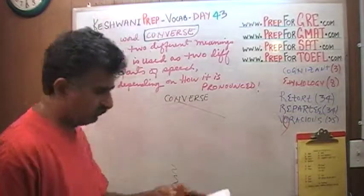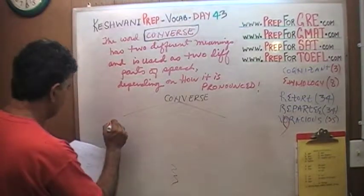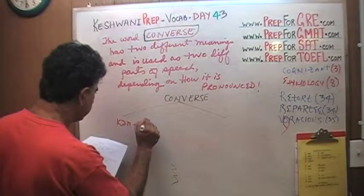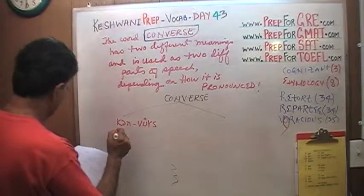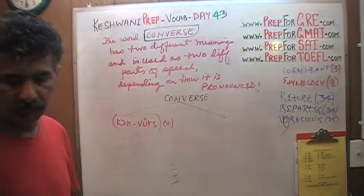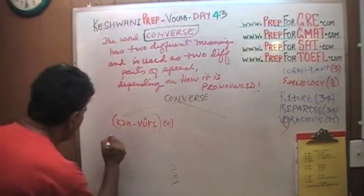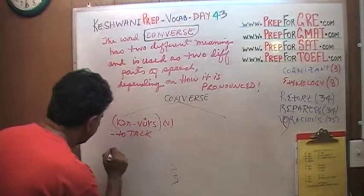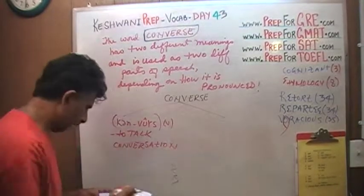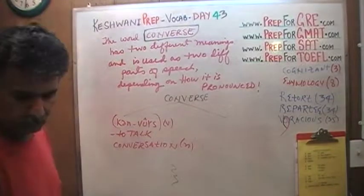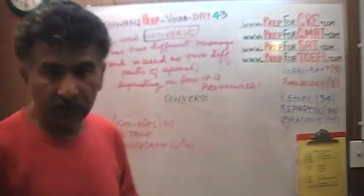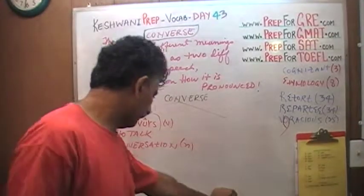Let's do the simple one first. Converse — as a word. Everybody knows what that means. To converse means to talk. And the noun, of course, would be conversation. Very simple, very straightforward. I'm conversing — I'm talking. If you engage in a conversation, you engage in a talk with somebody. Converse.